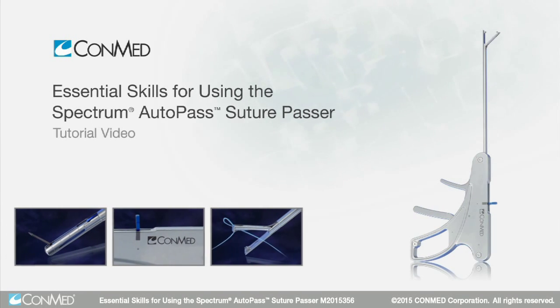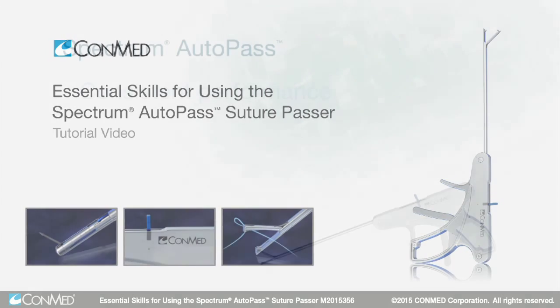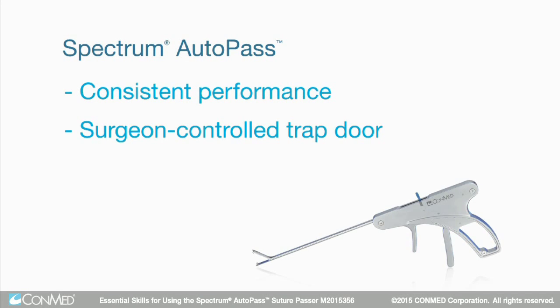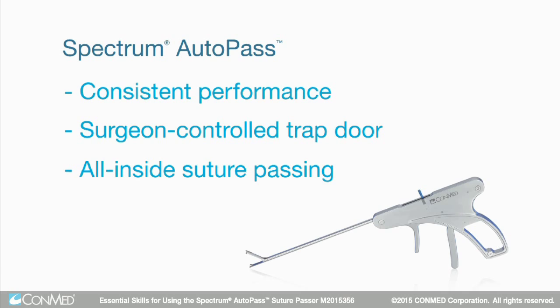The Spectrum Autopass Suture Passer from ConMed features consistent performance in thick tissue, a surgeon-controlled trapdoor that allows the option of releasing the suture in the joint, and all inside suture passing that eliminates the loading step.